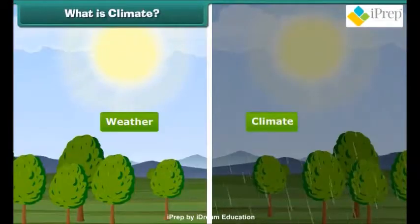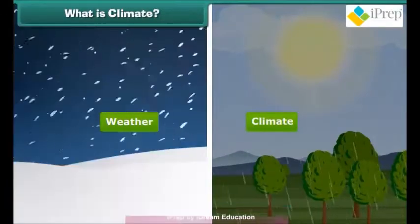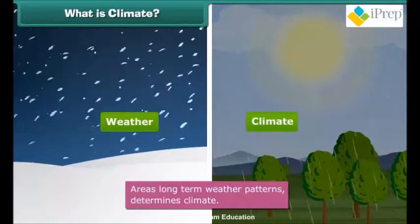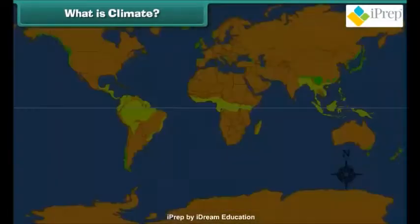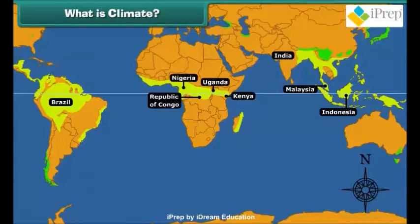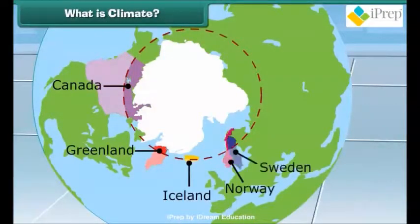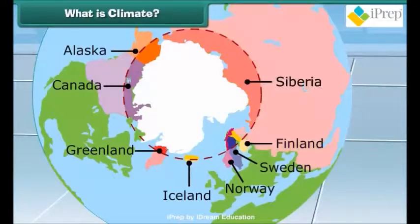Is weather and climate the same? No. An area's long-term weather patterns determine its climate. For example, areas near the equator have a warm climate and the areas near the poles have a much colder climate. So children, now you can easily differentiate weather from climate.